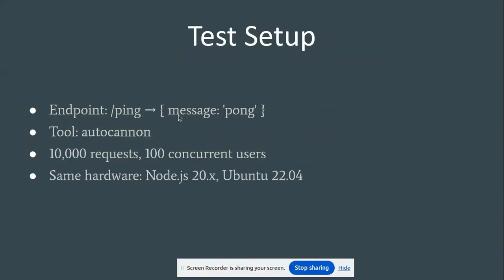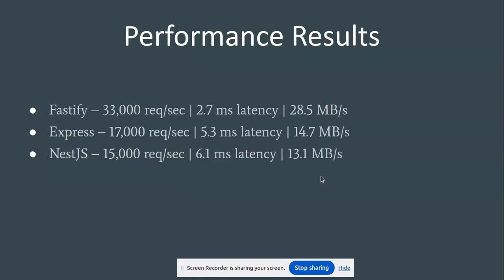The test endpoint is slash ping, returning message pong. The tool we are using is Autocannon with 1000 requests and 100 concurrent users, on the same hardware running Node.js on Ubuntu.